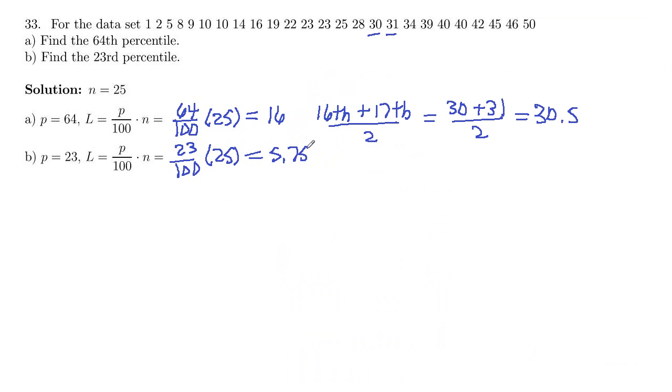And if you get a decimal, you always round up. So this rounds up to 6, so that means the 6th position. So 1, 2, 3, 4, 5, 6, 10 is in the 6th position right there.